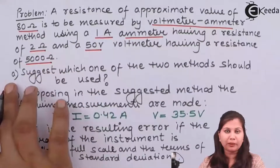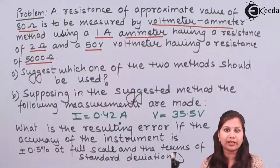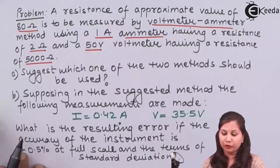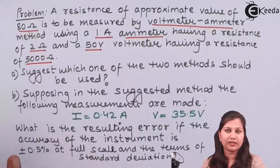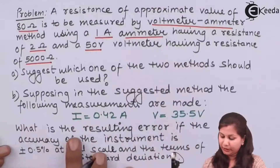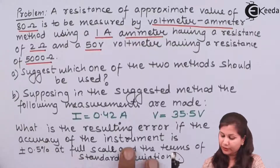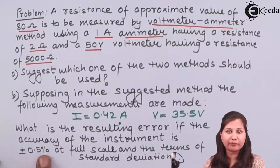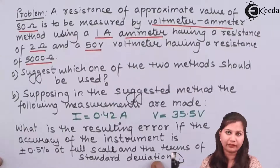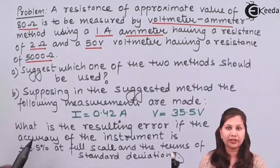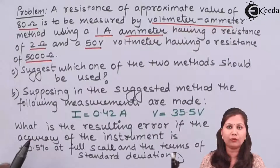In the first part, we have to suggest that out of the two connections of the ammeter-voltmeter method, which connection is used for the measurement of this 80 ohm resistance. In the second part, once we have determined which connection is used, we are given the readings of the current and the voltmeter and we have to determine the error in the measurement if the accuracy of the instruments is plus minus 0.5 percent of the full scale, expressed in terms of standard deviation.